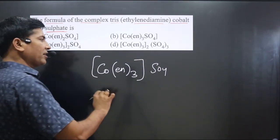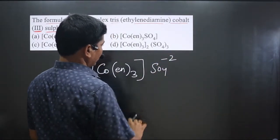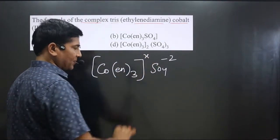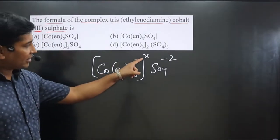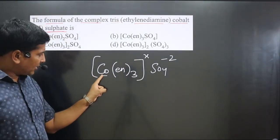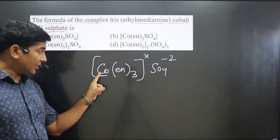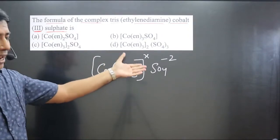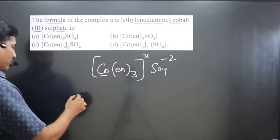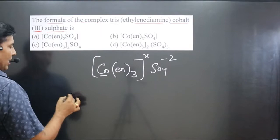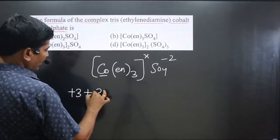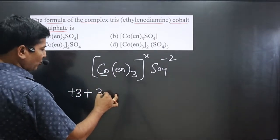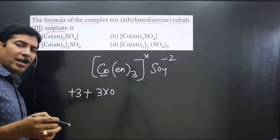If we know the charges of both the cationic and anionic parts, we can balance the overall charge and get the chemical formula. Sulfate always carries a −2 charge. For the cationic complex, we don't know the charge, so we assume it is x. The oxidation number of cobalt is already known — it is +3. Ethylenediamine is a neutral ligand, so it has zero charge.